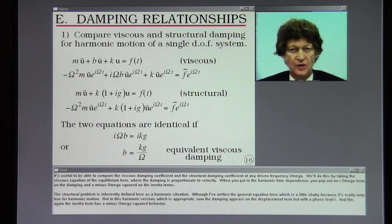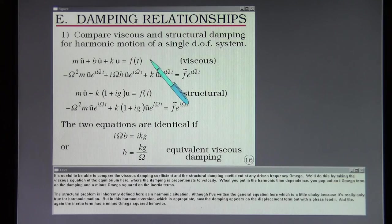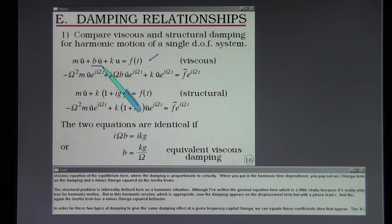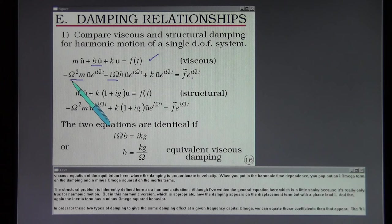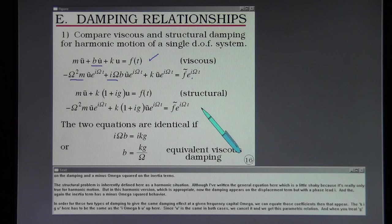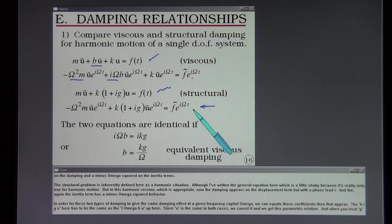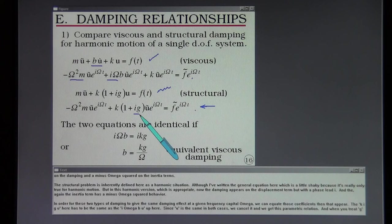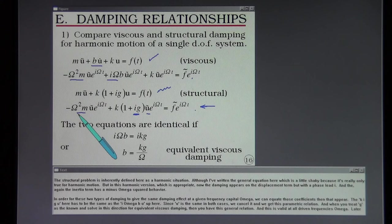It's useful to be able to compare the viscous damping coefficient and the structural damping coefficient at any driven frequency capital omega. We'll do this by taking the viscous equation of equilibrium here where the damping is proportionate to velocity. When you put in the harmonic time dependence you pop out an i omega term on the damping and a minus omega squared on the inertia terms. The structural problem is inherently defined here as a harmonic situation. Although I've written a general equation here which is a little shaky because it's really only true for harmonic motion. But in this harmonic version which is appropriate, now the damping appears on the displacement term but with a phase lead i.